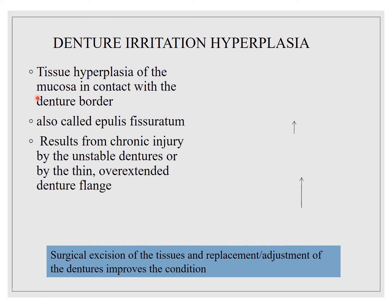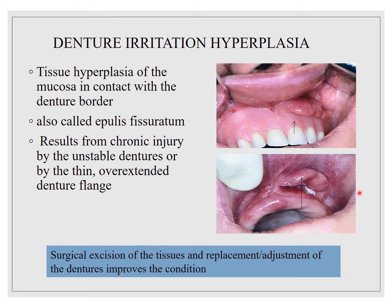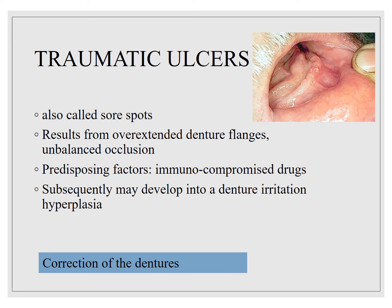Coming to denture irritation hyperplasia — this is tissue hyperplasia of the mucosa in contact with the denture border, also called epulis fissuratum. It results from chronic injury by an unstable denture or by thin or overextended denture flanges. That is why we have rounded borders through border molding and do not have overextended denture flanges, as these lead to traumatic ulcers. Surgical excision of the tissue and adjustment of the denture improves the condition.